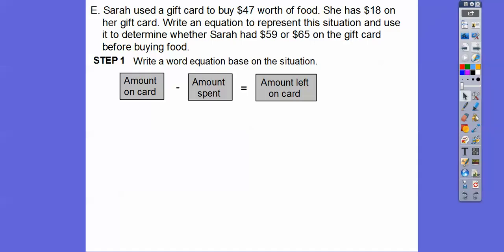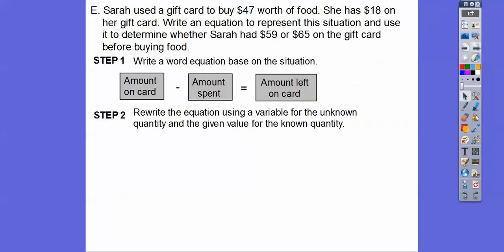So the amount of the card, which is what we don't know, minus the amount spent, and then up here it says that she spent, used a gift card to buy $47. So that's how much she's going to be spending right here. That's going to equal the amount on the card left that's on the card. And they say right here that she has $18 left on the card right there. So this will be $18. This will be $47, and we'll let this one be the variable right here.